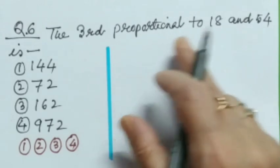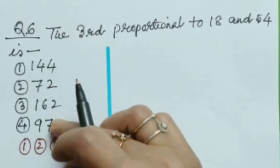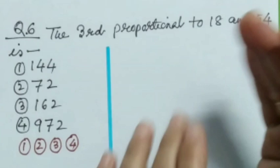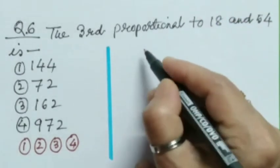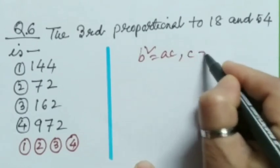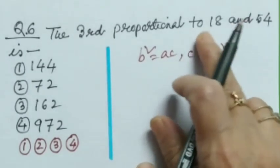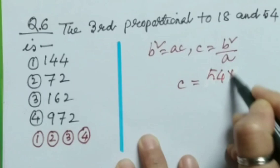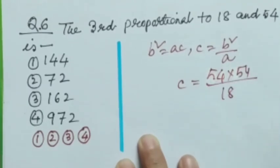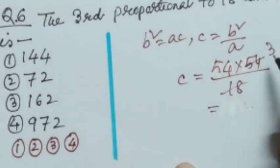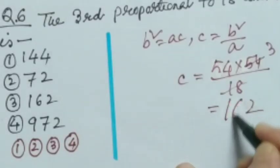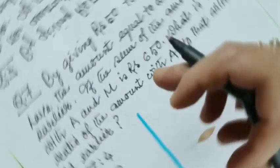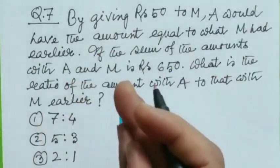Question number 6. The third proportional to 18 and 54 is, here it's given options. This one also will do by using formula. We know if a, b, c are in proportion where c is the third proportional, then b square is equal to ac. And therefore c is equal to b square divided by a. And in this case a is equal to 18, b is equal to 54. c is equal to 54 into 54 divided by 18, which is 162. So I'll bubble here option 3.